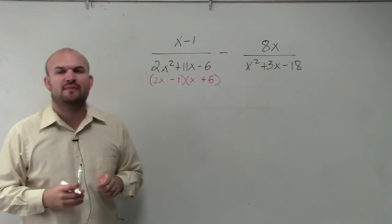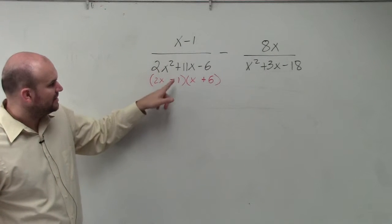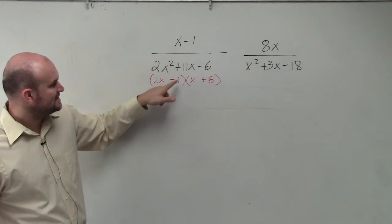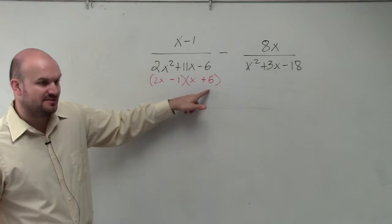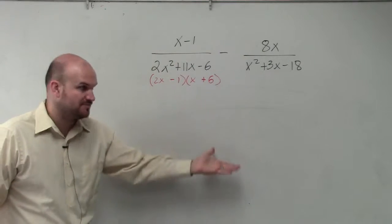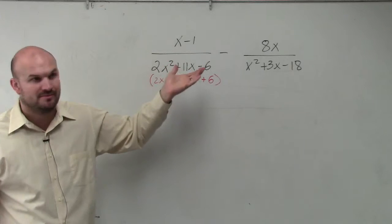And let's just double check if the math that I did in my head is correct. 2x times x is 2x squared. Negative 1 times 6 is negative 6. 1 times x is negative 1x. And 2x times 6 is positive 12x. Positive 12x plus negative 1x gives me a positive 11x. So I did the math in my head correctly.